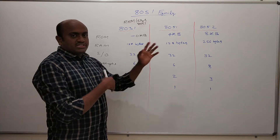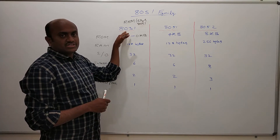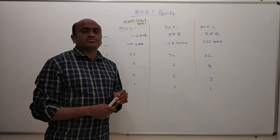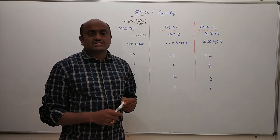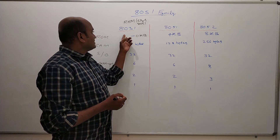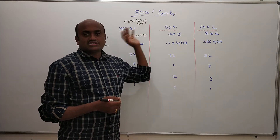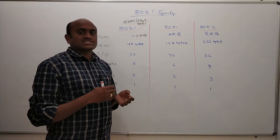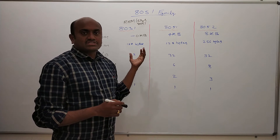So when would we choose the 8031? Whenever we are working with an application that requires more than 4 kilobytes of ROM memory — that means more than 4 kilobytes of storage space — we will go for external memory. When internal memory is not sufficient, we choose external memory. In such applications where external memory is required, we will go for the 8031.